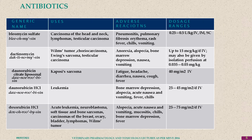In the antibiotic class, bleomycin sulfate is used in carcinoma of the head and neck, lymphomas, and testicular carcinoma. Dactinomycin is another antibiotic used in Wilms' tumor and other testicular carcinomas. Side effects include anorexia, alopecia, bone marrow depression, nausea, and endometriosis, which are very common in most antineoplastic drugs.